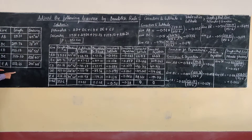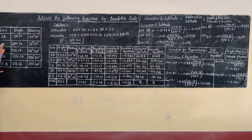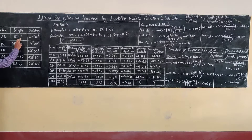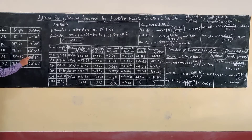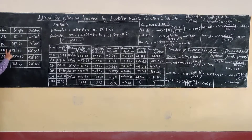The data given includes five lines: AB, BC, CD, DE, and EA — this is a closed traverse. The length of each of these five lines is given, and the bearings of all five lines are also given.